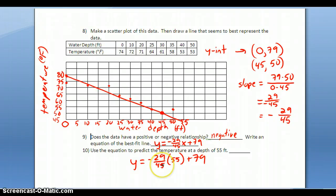When I calculate -29/45 times 55 plus 79, I get 43.5 repeating. So as an estimate, rounding to the nearest degree, I predict the temperature at a depth of 55 feet to be about 45 degrees Fahrenheit.